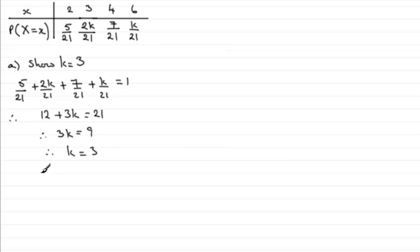Now in part b we're asked to work out F of 3, often called the cumulative probability function. It works out the probability of your random variable x being less than or equal to this given value here, 3 in this case. So the probability that x is less than or equal to 3 is going to be the probability that x equals 2 plus the probability that x equals 3.